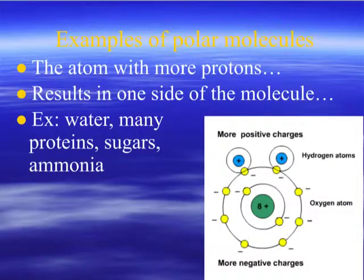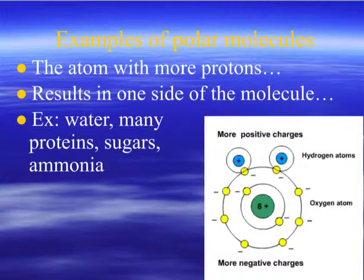Here's an example. The water molecule shown here has one oxygen atom and two hydrogen atoms. The oxygen atom has eight protons in its nucleus, and it's much, much bigger than the hydrogen atoms, which only have one proton in the nucleus. As a result, one side of the molecule becomes positively charged — that's the hydrogen side — and one side becomes negatively charged — that's the oxygen side — because the electrons spend more time around the oxygen than around the hydrogen. Examples of polar molecules include water, some proteins, sugars, and ammonia.